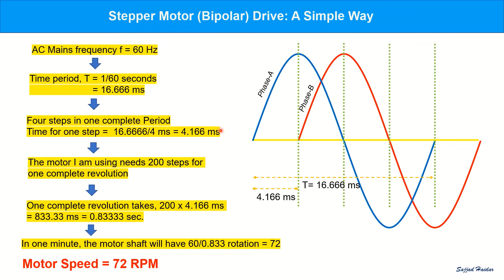We can easily determine the rotational speed of a bipolar stepper motor. For instance, here, if we use our AC mains, the frequency is 60 Hz. So the time period is 16.66 ms. Four steps in one complete period. The time for each step is 4.166 ms.